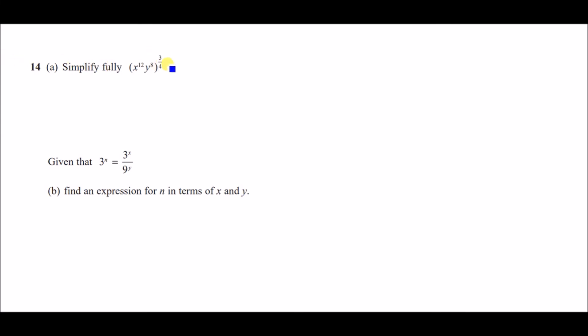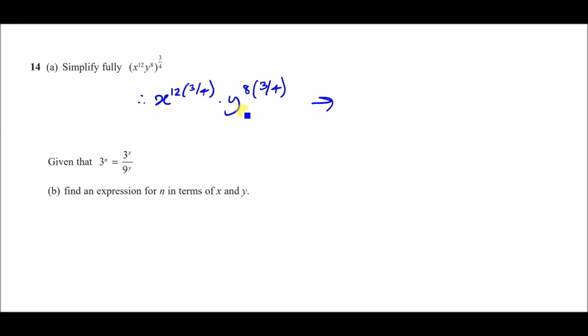Number 14: simplify fully the expression (x¹²y⁸)^(3/4). Attach the power outside the bracket to every single term: x to the power of 12 × 3/4 and y to the power of 8 × 3/4. So 12 × 3/4 = 36/4 = 9, and 8 × 3/4 = 24/4 = 6. The simplified answer is x⁹y⁶.